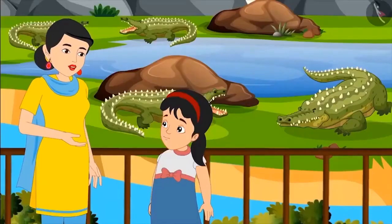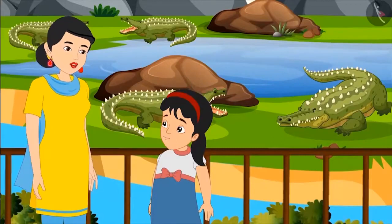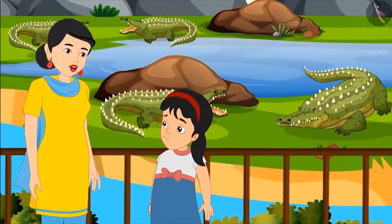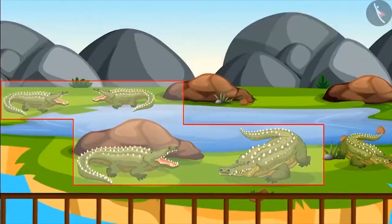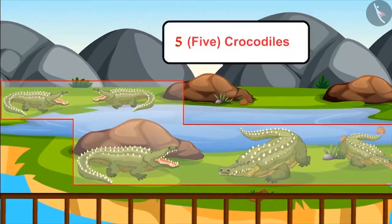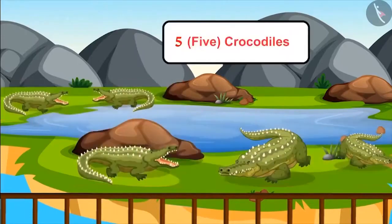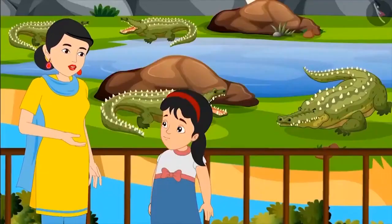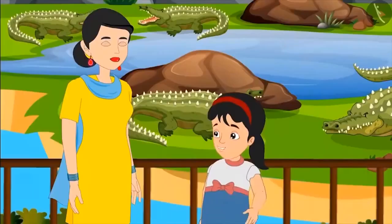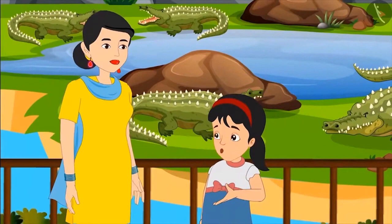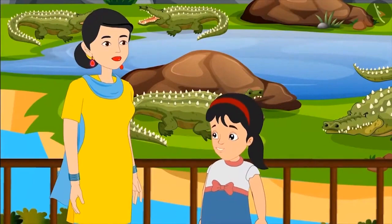The mother says: there are crocodiles in that paddock. Can you tell me how many? Pinkie counts: 1, 2, 3, 4 and 5. That means that paddock has 5 crocodiles. Absolutely correct, very nice Pinkie. How different and colorful all these animals are — after going home, I will draw a picture of them.